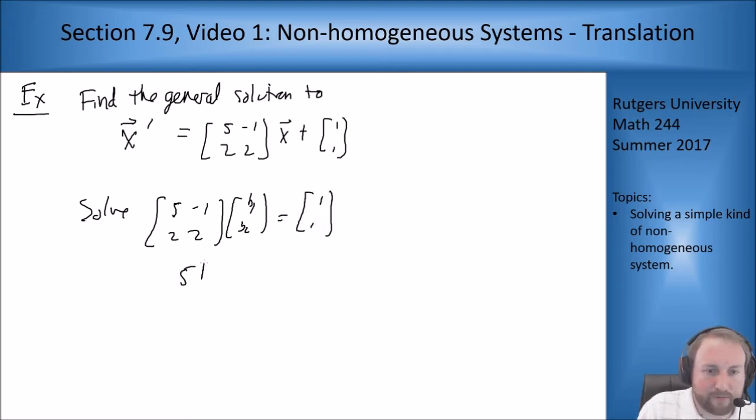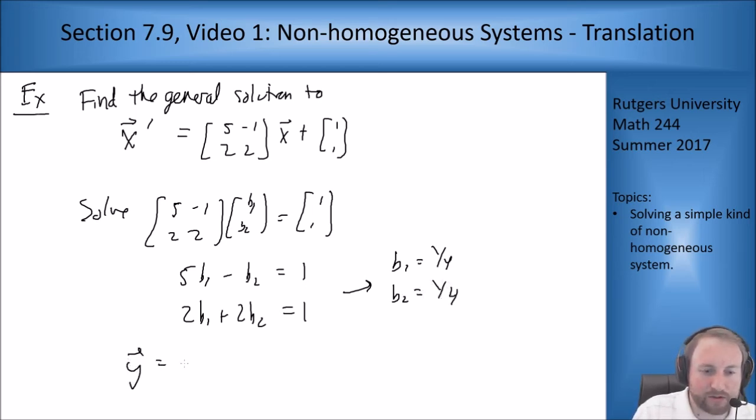So I need to solve [5 -1; 2 2] times [b₁; b₂] equals [1; 1]. This gives me 5b₁ minus b₂ equals 1, 2b₁ plus 2b₂ equals 1. And if you solve this, then we get b₁ is a quarter and b₂ is a quarter. So then I want to set y equal to x plus [1/4; 1/4], i.e. x equals y minus [1/4; 1/4].